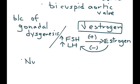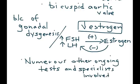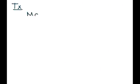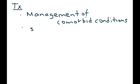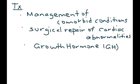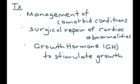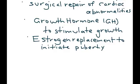There are numerous other ongoing tests and specialists involved. Treatment of Turner Syndrome involves managing all comorbid conditions. Surgically, you can repair the cardiac abnormalities. Growth hormone is given to help stimulate growth. Estrogen replacement is used to initiate puberty. Finally, oral contraceptive pills containing estrogen and progesterone are given to help maintain secondary sexual characteristics.